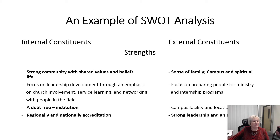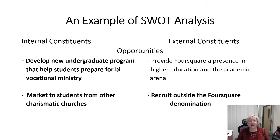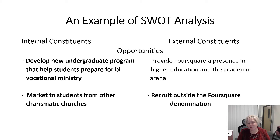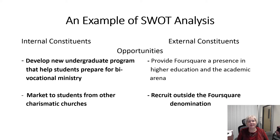Now I'm going to take a look at our opportunities. Internally, those involved in the organization have a perception that we need to develop undergraduate programs to help students prepare for bivocational ministry. We also need to work on marketing our current programs to other charismatic churches, such as the Assemblies of God denomination or the Pentecostal Church of God denomination. The external constituency also resonates with the internal in that they believe we need to recruit outside the Foursquare denomination.